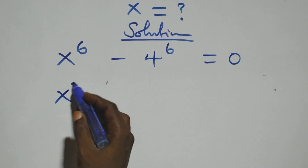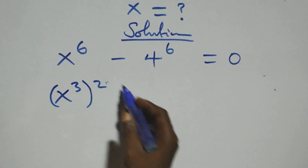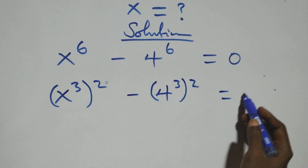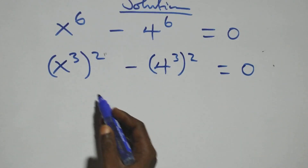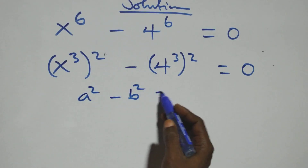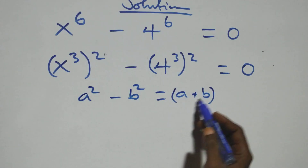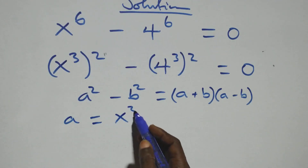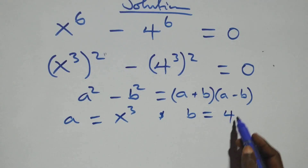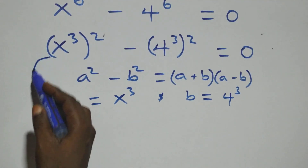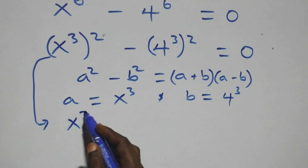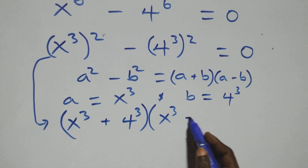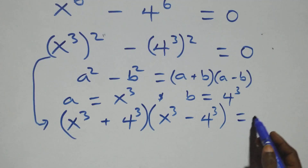We can rewrite this as x raised to the power 3, all raised to the power 2, since 2 times 3 gives us 6. Then we also have minus 4 raised to the power 3, all raised to the power 2, equals to 0. This follows the identity a squared minus b squared equals a plus b into a minus b, where a stands for x raised to the power 3 and b stands for 4 raised to the power 3. So this becomes x cubed plus 4 cubed, times x cubed minus 4 cubed, equals 0.